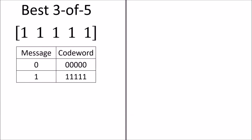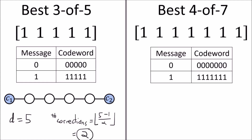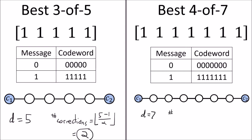For example, in the best three-out-of-five repetition code where we repeat the message bit five times, since the minimum distance is five we can correct up to two-bit errors. That makes sense since with this code we take a best three-out-of-five majority vote to fix the errors. And with the best four-out-of-seven repetition code the minimum distance is seven, so we can correct up to three-bit errors.